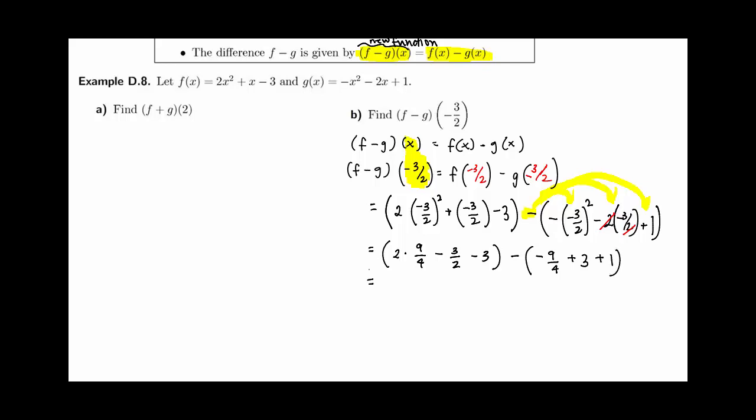Simplifying a little further in this first parentheses where 2 goes into 4 twice, so I'm left with 9 halves minus 3 halves minus 3, minus negative 9 fourths, plus 3, plus 1, which is plus 4.